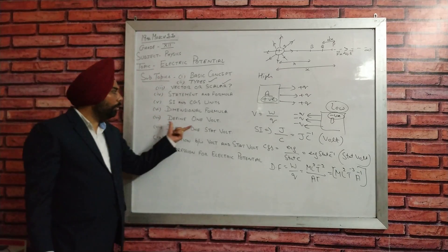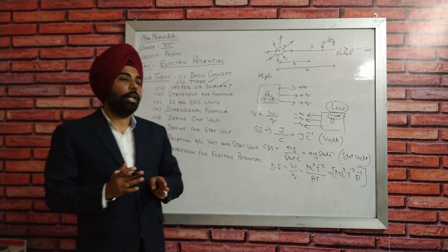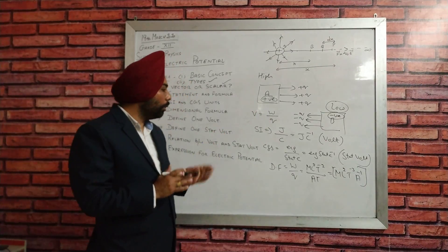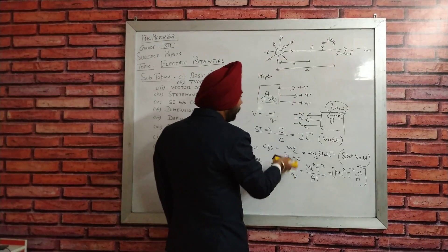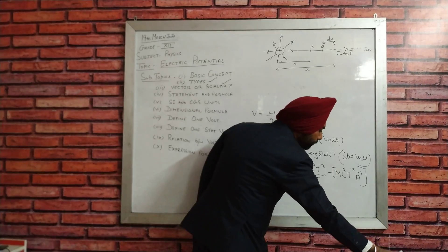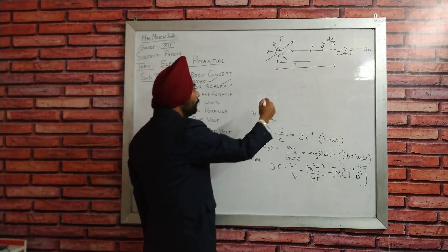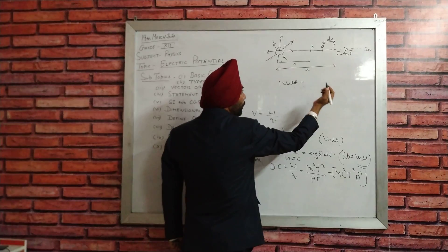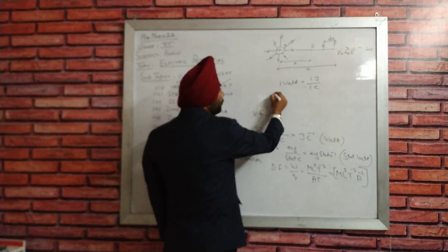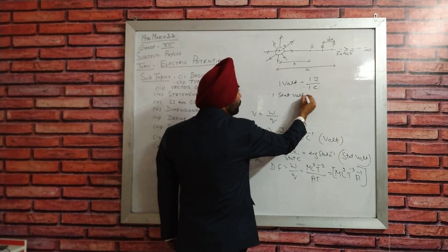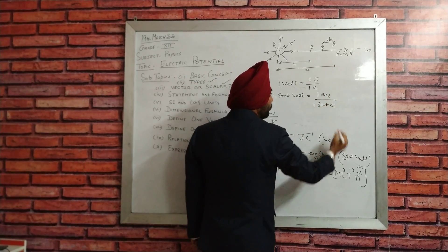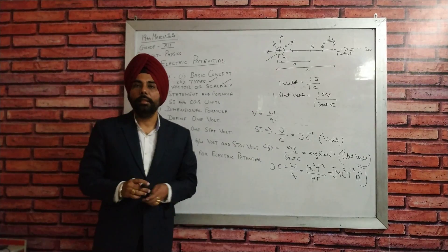Now if you want to define one volt, it is very simple if you know the basic formula V = W/Q. One volt is equal to one joule upon one coulomb. Similarly, one statvolt is equal to one erg over one stat coulomb. So these are the basic definitions of one volt and one statvolt.